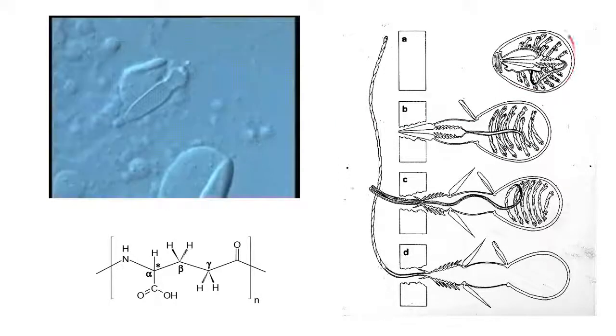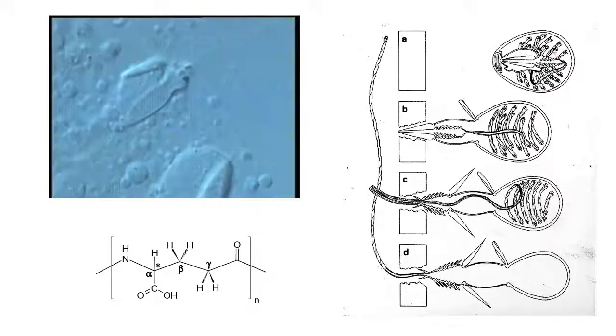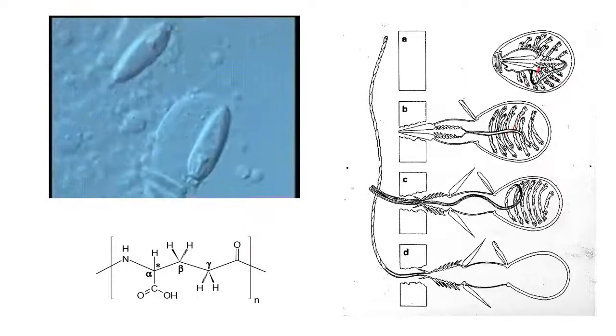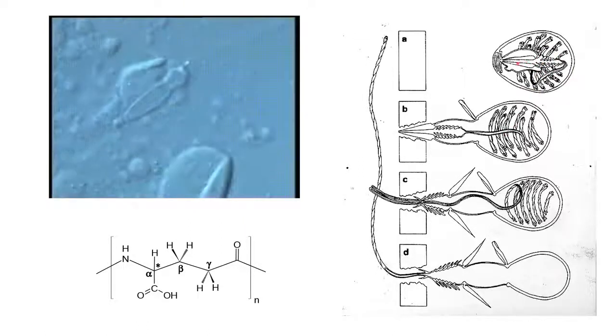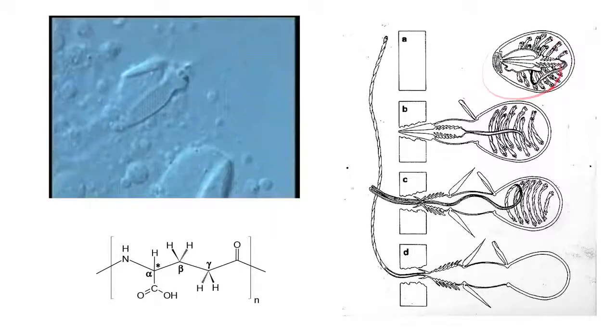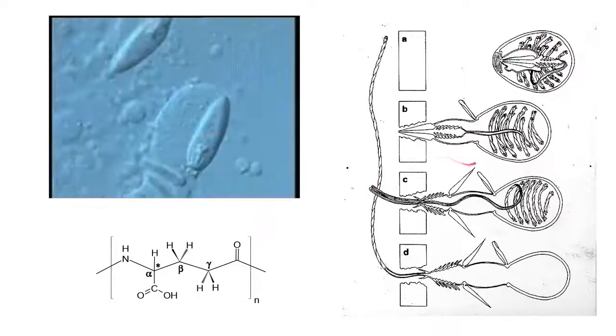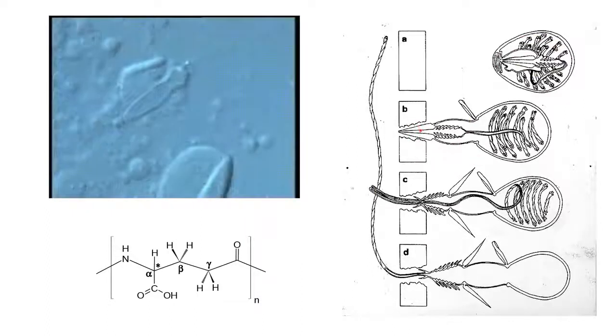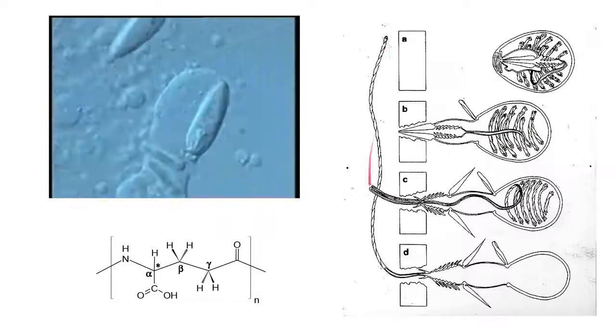In both cases, you have this contractile capsule that contains a coiled filamentous tubule. In both cases, there's this spearhead-type structure that serves to pierce this operculum that encloses this whole thing, and in the case of cnidarians, can also pierce the epidermis of an animal. And in both cases, this filamentous tubule is injected by similar means.